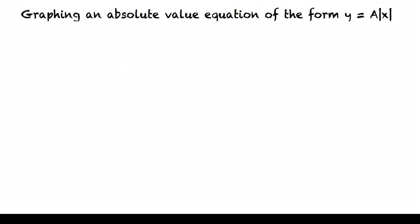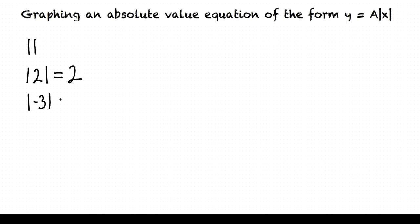First, let's remember what the absolute value means. Any term within absolute value bars always equals the positive of that number. So for example, the absolute value of 2 equals positive 2, and the absolute value of negative 3 equals positive 3.